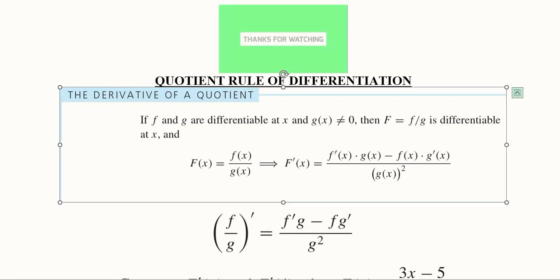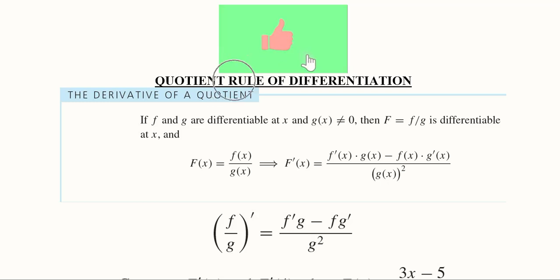Hi there. After understanding the product rule, we can also understand the quotient rule of differentiation. Here, we will have a function which will be composed of two further sub-functions which will be in the form of a quotient. So let us see how we can differentiate such a function.